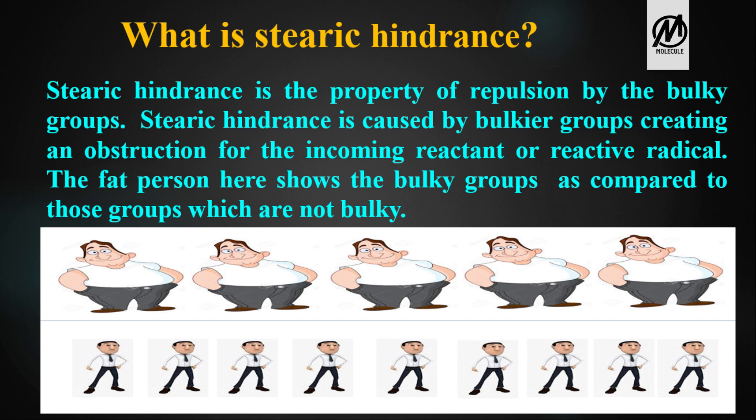What is steric hindrance? Steric hindrance is the property of repulsion by bulky groups. It is caused by bulkier groups creating an obstruction for the incoming reactant or the reactive radical. As discussed earlier, atoms arrange themselves in such a way that they are in a minimum repulsion state.